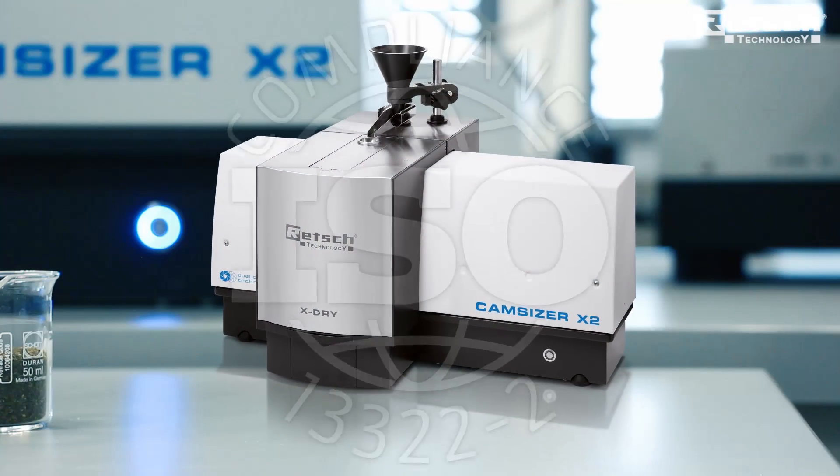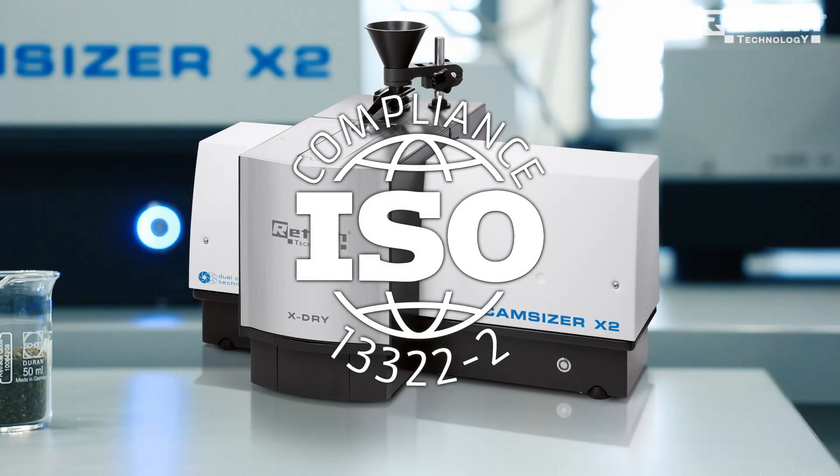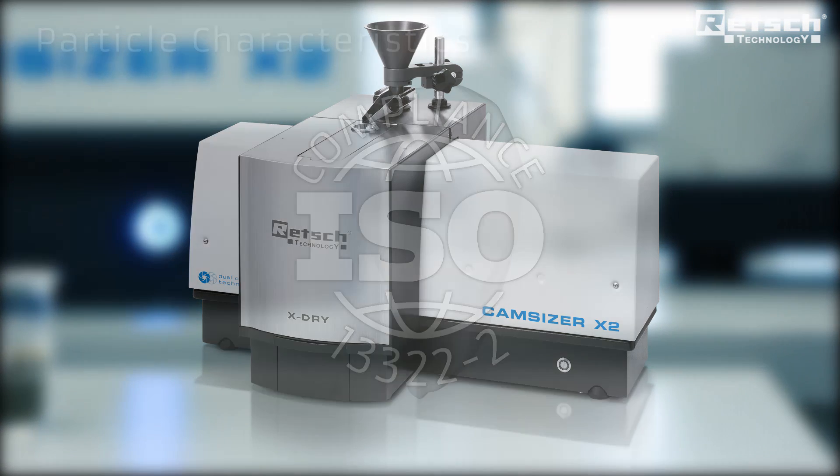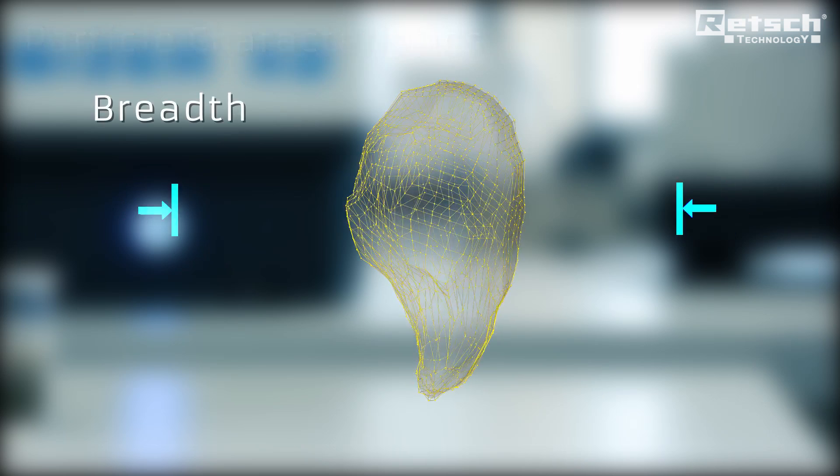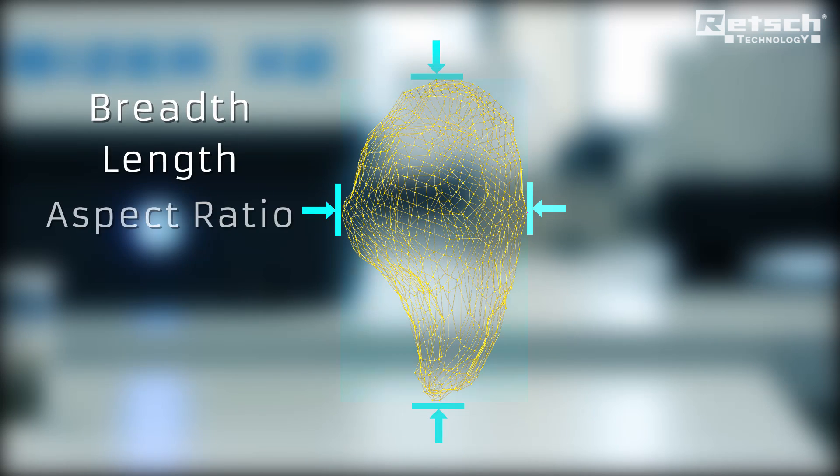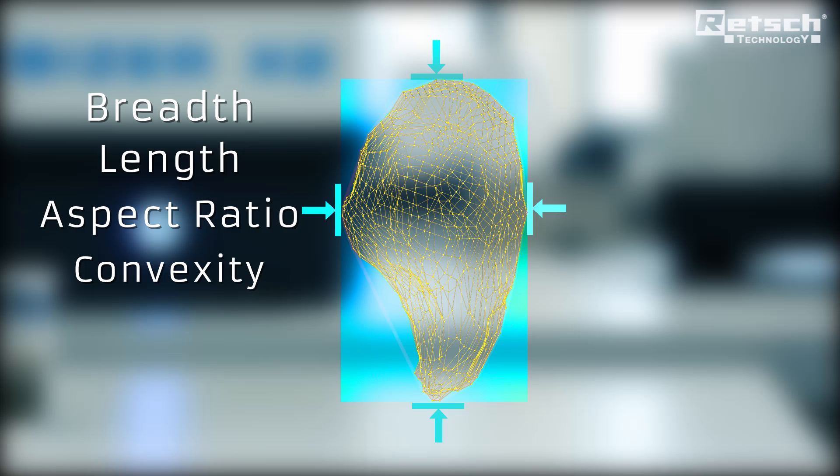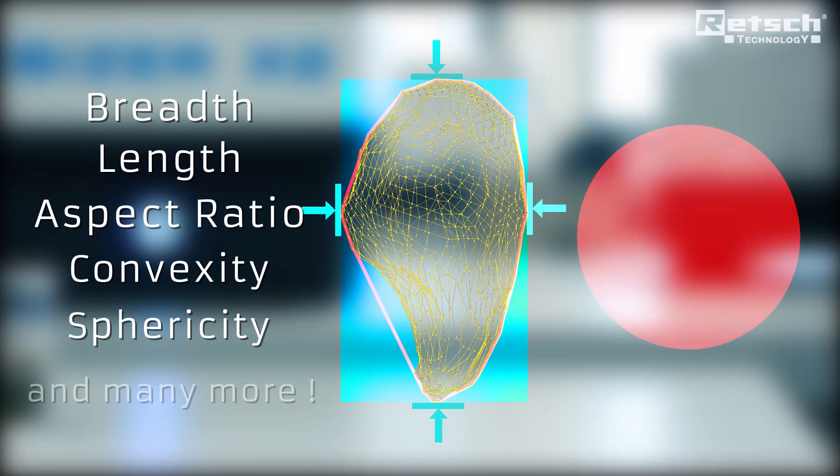The CamSizer X2 operates in compliance with the ISO standard 13322-2 and provides detailed information on different particle characteristics such as breadth, length, aspect ratio, convexity, sphericity and many more.